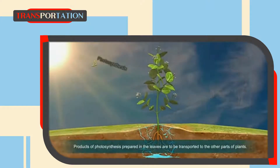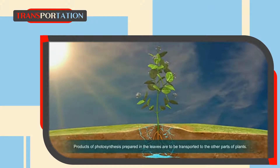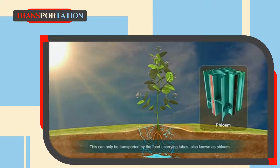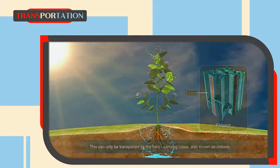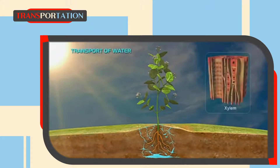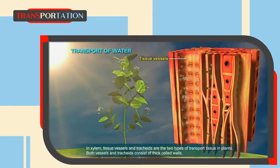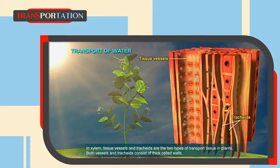The products of photosynthesis prepared in the leaves are transported to other parts of the plant. This can only be transported by the food-carrying tubes, also known as phloem. In xylem tissue, vessels and tracheids are the two types of transport tissue in plants.